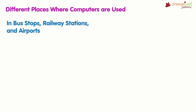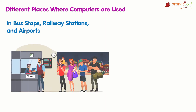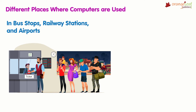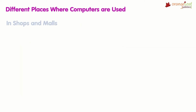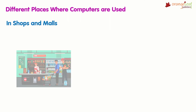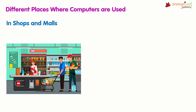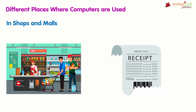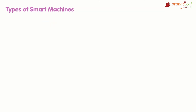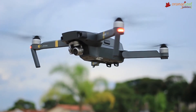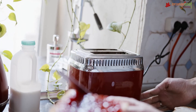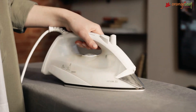At bus stops, railway stations, and airports, computers are used to book and cancel tickets. In shops and malls, computers are used to make bills, keep records of provisions, and keep track of people. There are other man-made electronic machines that make our work faster and easier, apart from computers.